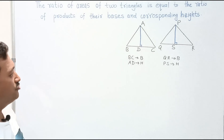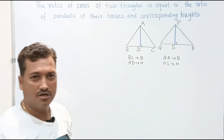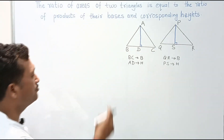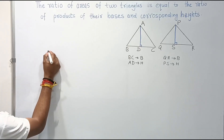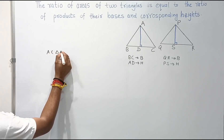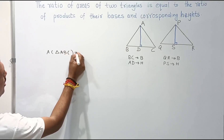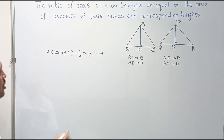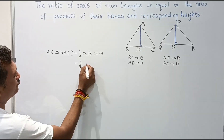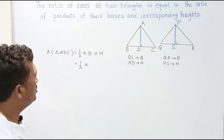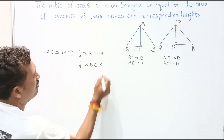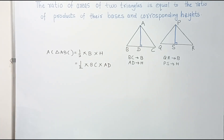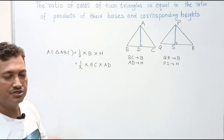Now we will find the ratio of areas of two triangles. First, the area of triangle ABC — you all know the formula for area of a triangle: half into base into height. For triangle ABC, the base is BC and the height is AD, so area of triangle ABC equals half into BC into AD.